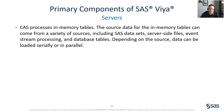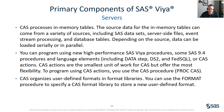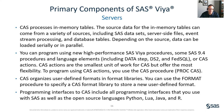You can program using new high performance SAS Viya procedures, some SAS 9.4 procedures and language elements including Datastep, DS2, and FedSQL, or CAS actions. CAS actions are the smallest unit of work for CAS, but offer the most flexibility. To program using CAS actions, you use the CAS procedure known as PROC CAS. CAS organizes user-defined formats in format libraries. Programming interfaces to CAS include all programming interfaces that you use with SAS, as well as those used with open source languages such as Python, Java, Lua, and R.